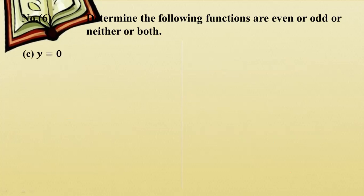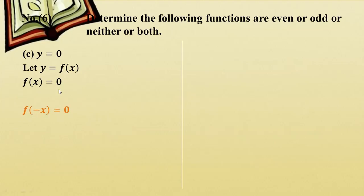Let y equal to zero. If f(x) equals zero, then f(-x) also equals zero. You can see that f(-x) equals f(x), and also f(-x) equals minus f(x), so this function is both even and odd.